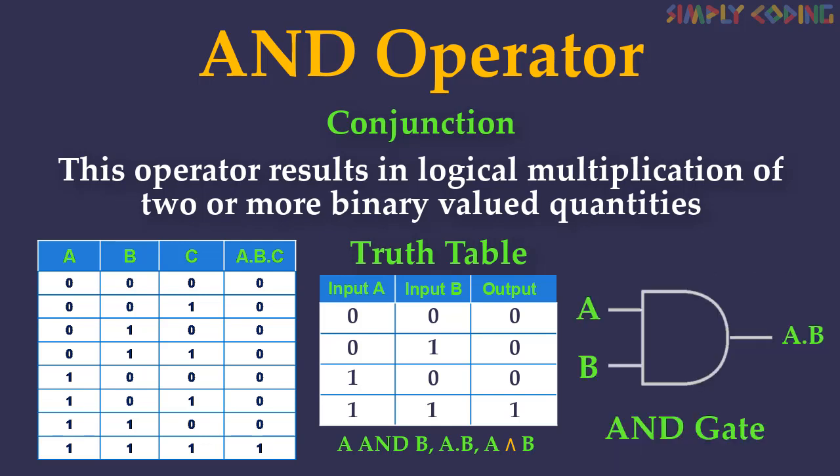The AND operator is denoted by a dot sign or an inverted V sign. A real-life example is that of a microwave — it will start only if the start button is pressed and the door is closed. In digital circuits it is called an AND gate. It is an electronic circuit that gives a high output only if all its inputs are high.